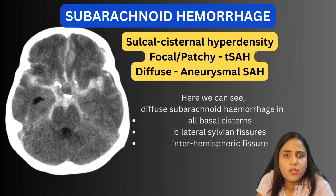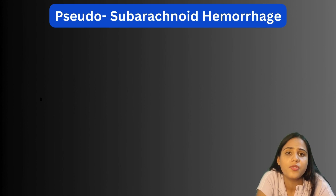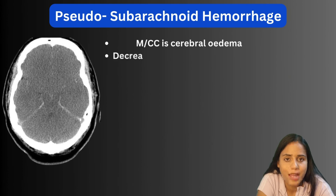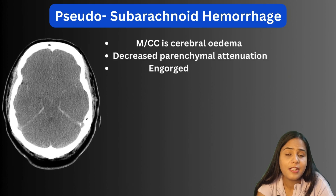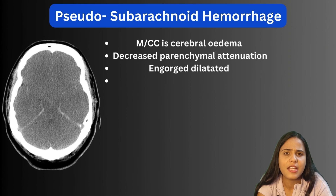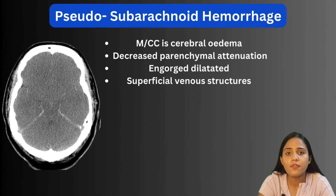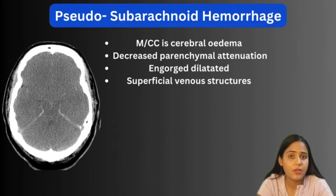An important mimic is pseudo subarachnoid hemorrhage. The most common cause is diffuse cerebral edema, where decreased parenchymal density combined with raised intracranial pressure leads to dilated engorged superficial venous structures. This usually occurs as a result of hypoxic-ischemic brain injury or recent resuscitation from cardiopulmonary arrest.